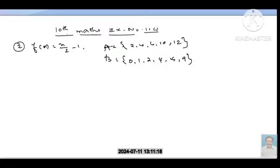First, f(x) = x/2 - 1. The function A gives B. Now let us apply f(x) = x/2 - 1. The function A value is given, so we'll apply the x values.